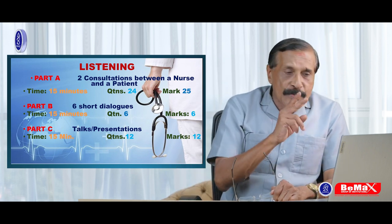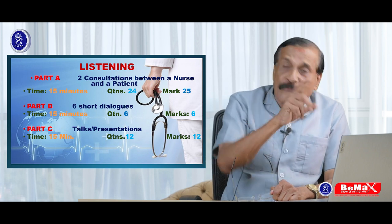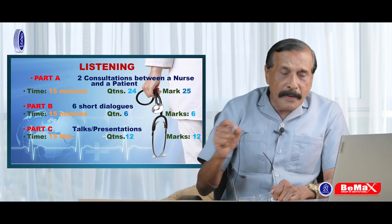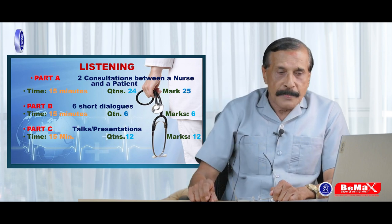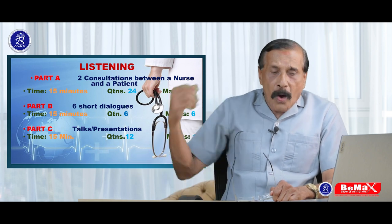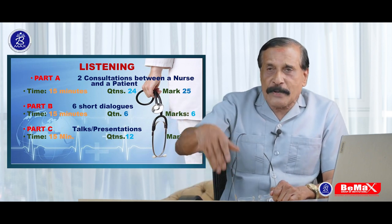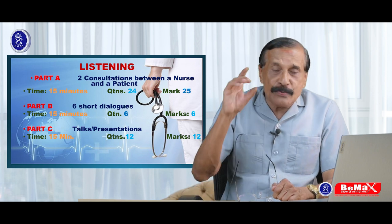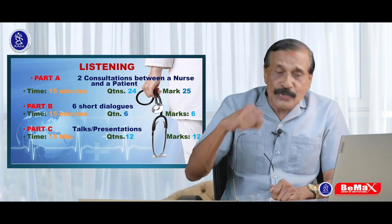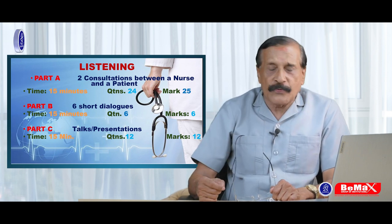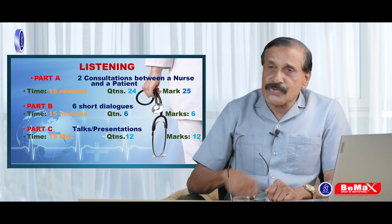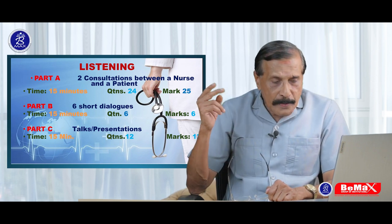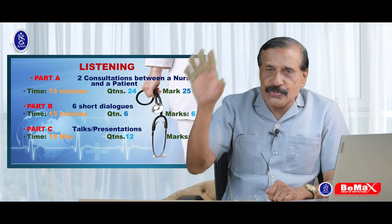Part A is about 15 minutes long with 24 questions worth 25 marks. It consists of two consultations between a patient and a doctor, nurse, or physiotherapist. Part B has six short dialogues, is also 15 minutes, with six questions and six marks. Part C is again 15 minutes, with 12 questions and 12 marks. That is a brief analysis of the Listening subtest.